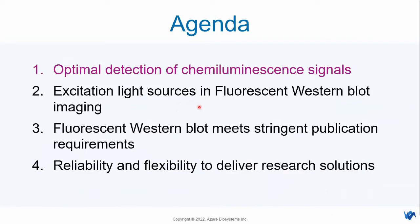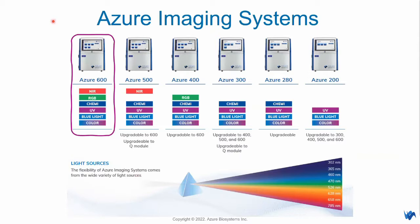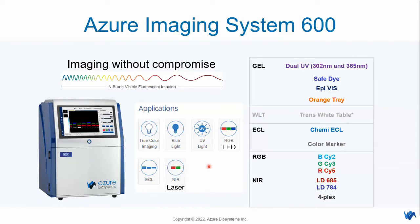The agenda for today: first, optimal detection of chemiluminescence signals; then excitation light sources in fluorescent western blot imaging; why fluorescent western blot meets the stringent publication requirement; and how this imaging system delivers research solutions with reliability and flexibility. The Azul Imaging System 600 is the highest model so far. All models are upgradable, but today we focus on the highest spec — the 600 model — which is capable of chemiluminescence and fluorescent western imaging without any compromises.